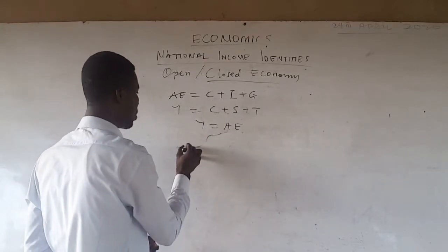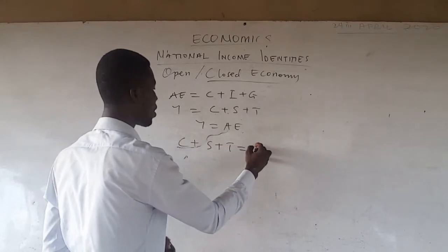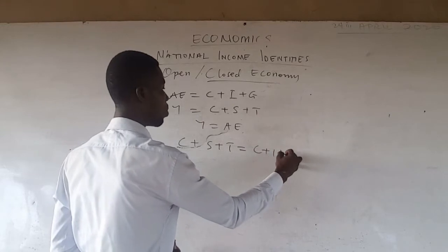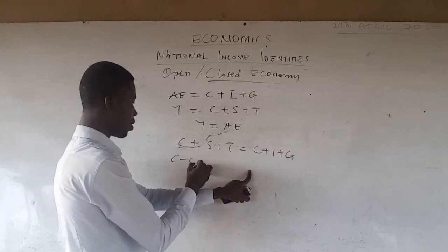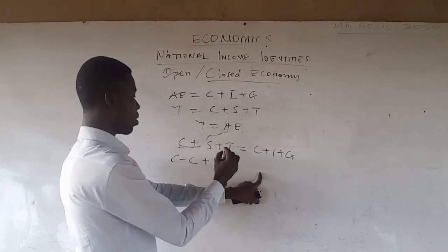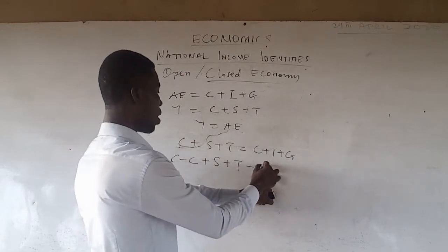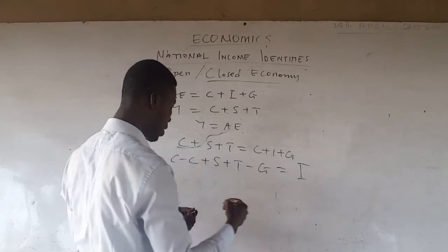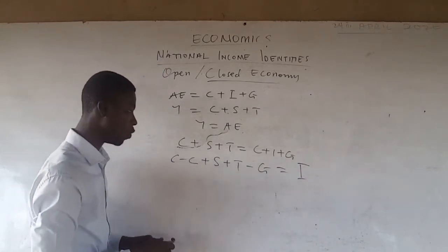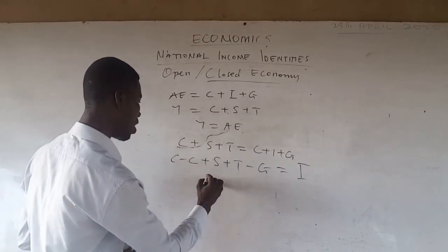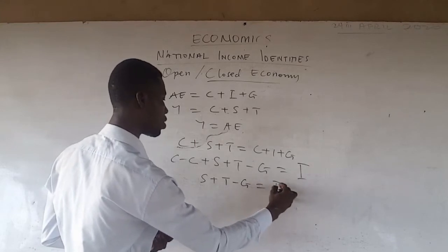We have C plus S plus T equals C plus I plus G. Grouping them, we have C minus C, plus S, plus T, minus G, which equals investment. The C minus C cancels out, leaving us with savings plus tax minus government expenditure equals investment.